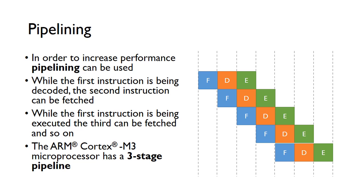That highlights the fetch, decode, execute cycle. This is where we just fetch, decode, execute, fetch, decode, execute repeatedly. But to increase performance, a technique known as pipelining can be used.